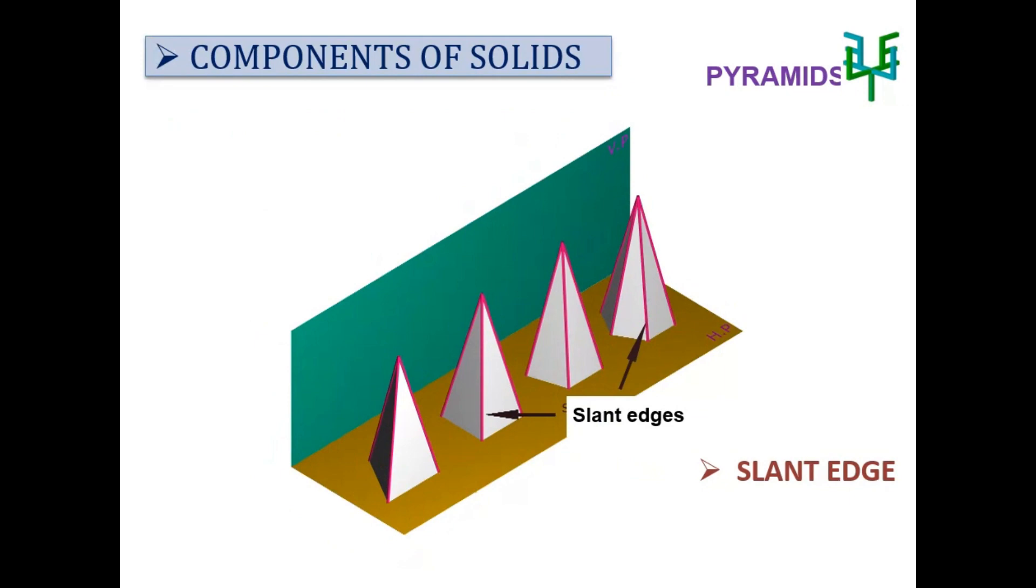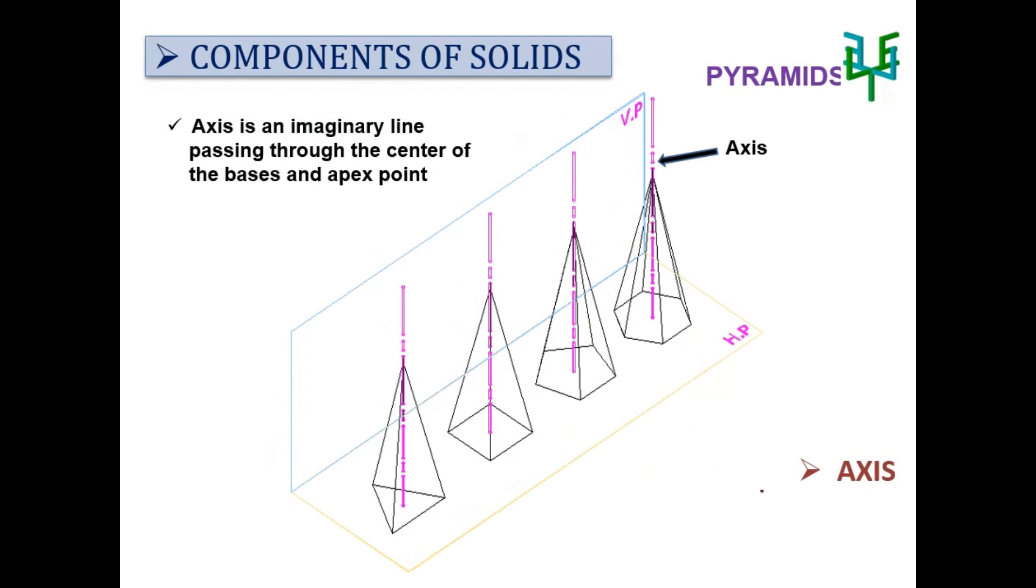Slant edges: these are the edges between the triangular faces of a pyramid. Axis is an imaginary line passing through the center of both the base and apex point.